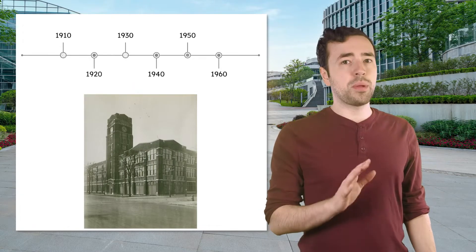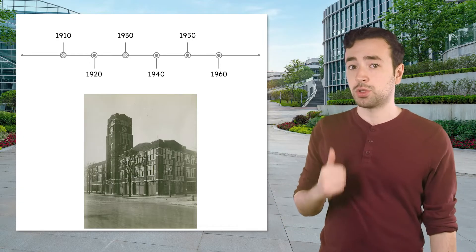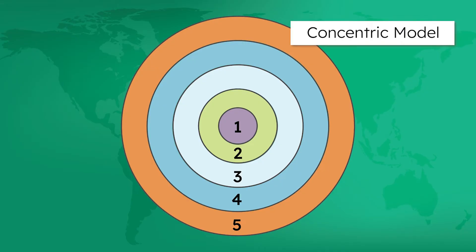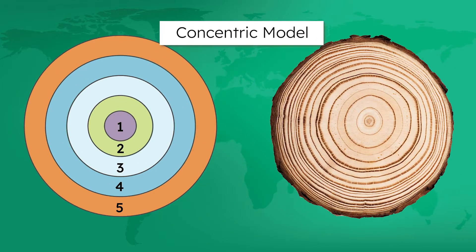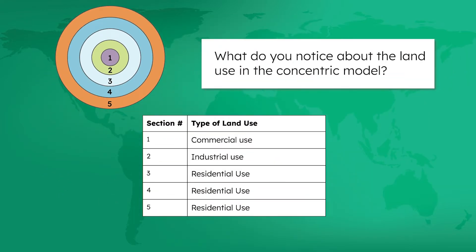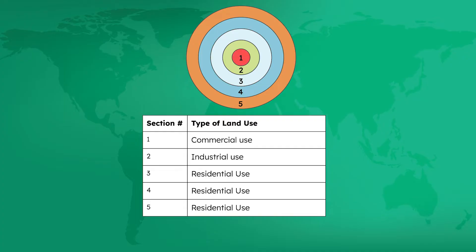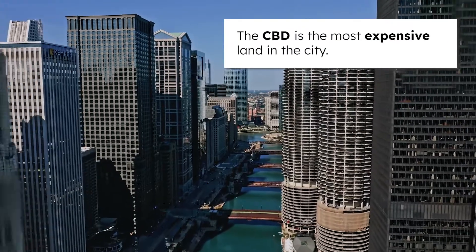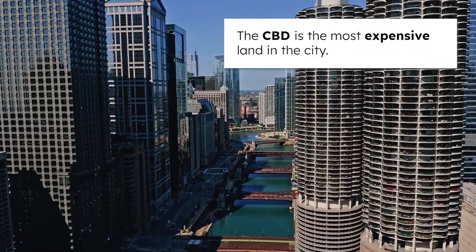To study urban models, we have to go back to the earlier days of Chicago's urbanization, around the 1910s and 1920s. Urban geographers observing Chicago's growth at that time developed the concentric urban model to explain the city's structure as it grew. Concentric means circles within circles, kind of like the concentric rings of a tree. This central ring is Chicago's Central Business District, or CBD, also known as The Loop.